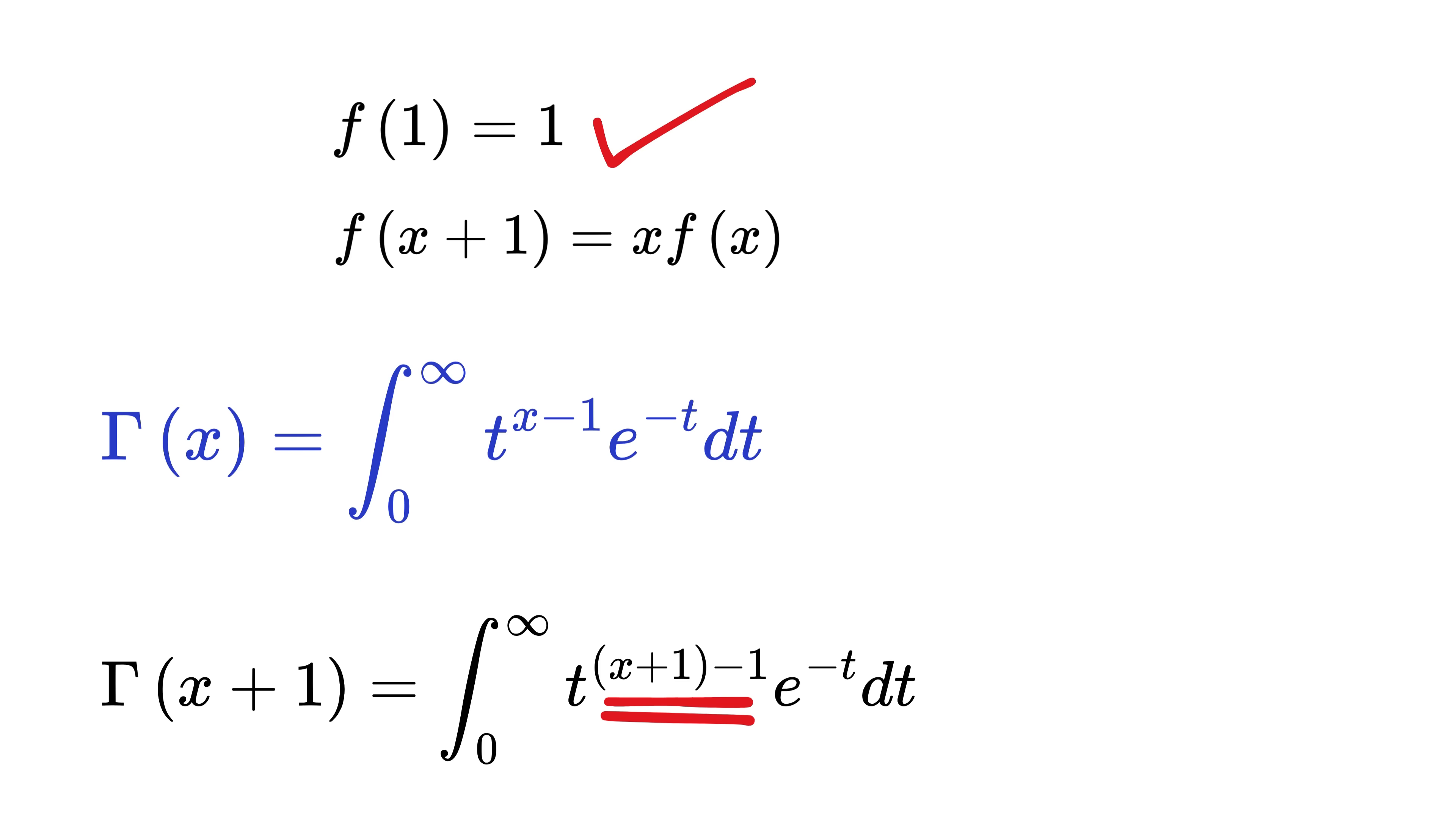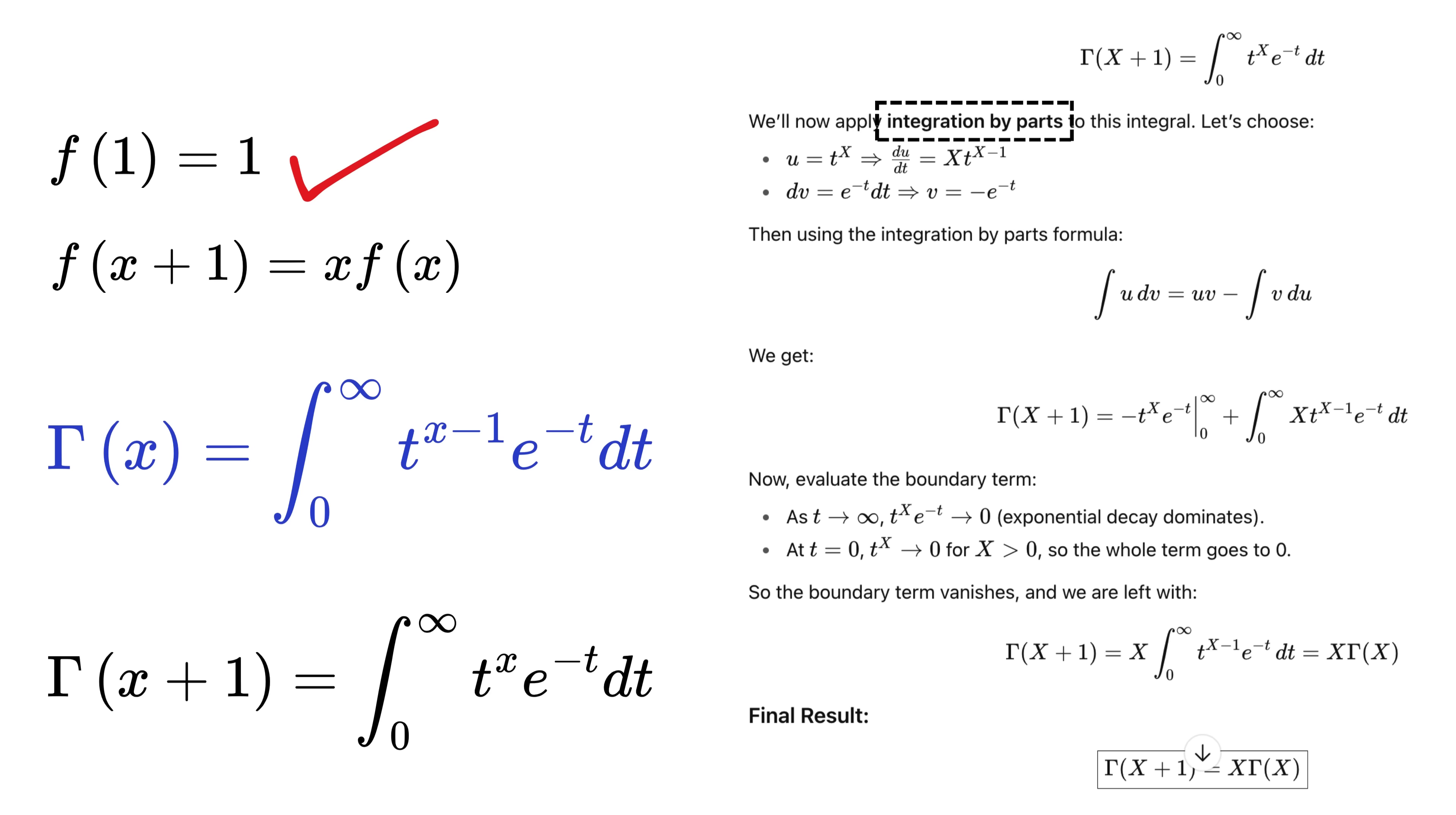Then if you apply integration by parts on this—I will not be going into the details—you will end up with gamma of x plus 1 equals x times gamma of x. This shows that the gamma function satisfies the recursive property just like the factorial, exactly what Euler wanted.